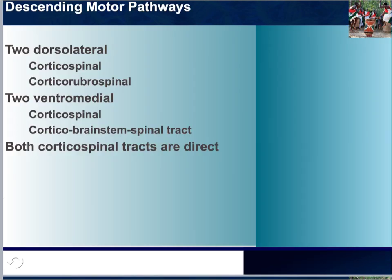We will now make our way down to the spine. When we talk about the spine, dorsal means the back and ventral means the front. We have the descending motor pathways, which are two dorsolateral and two ventral medial. Please note that both cortical spinal tracts are direct.